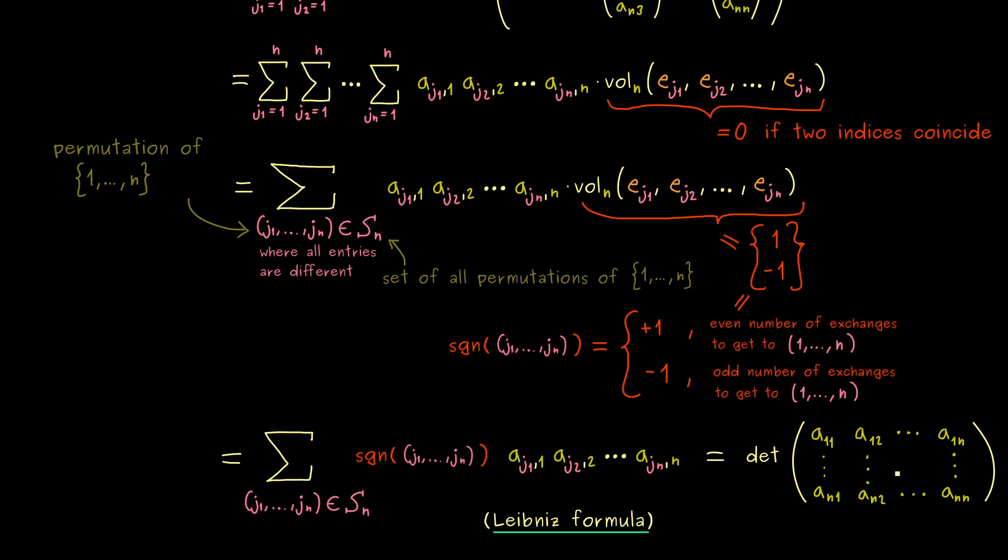The combination of all possible products with n factors. So it seems like a funny calculation rule, but you already know it gives us the volume, the oriented volume of the parallelepiped. But you could say if n is really large, this is not easy to calculate.